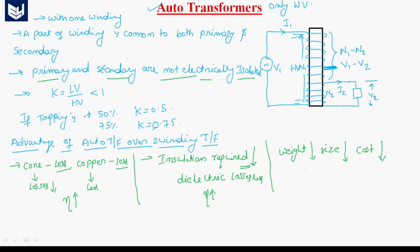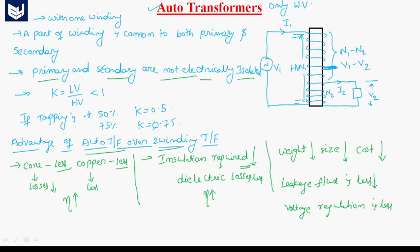One more advantage is that in an autotransformer, the leakage flux is very much less because there is only one winding. The flux leakage will be less, therefore the voltage regulation is also less. As the leakage flux is less, the leakage reactance is also less. Whenever the leakage reactance is less, voltage regulation is less. These are all the advantages of autotransformer over the two winding transformer.